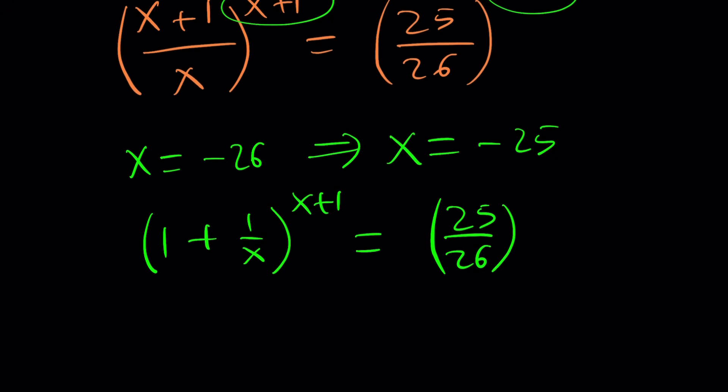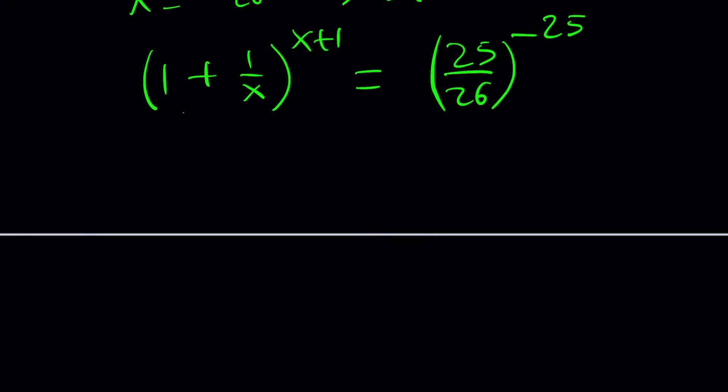Now, I noticed that since 25/26 is less than 1, I can't really write it as 1 + 1/something unless x is different. Let's go ahead and take a look. Yes, I can't write it as 1 + 1/x, but I can write it as 1 - 1/26. You know what I'm talking about? Okay, we're getting there little by little. Bear with me.